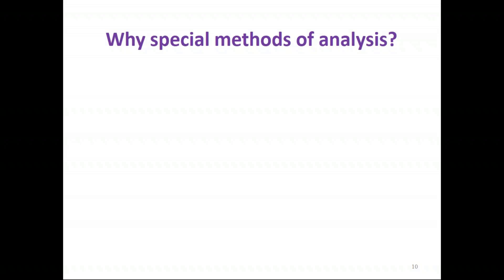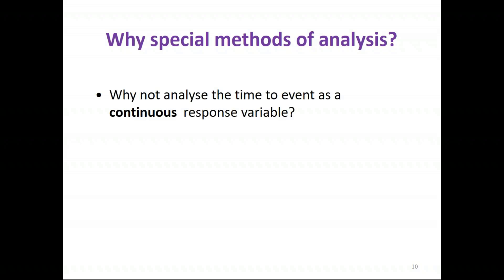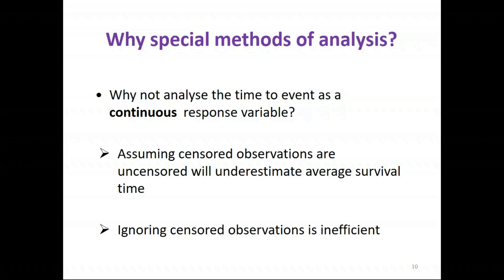When dealing with time-to-event data, time is obviously a continuous variable, so why do we need to use special methods of analysis? Why can't we just analyse the time-to-event as a continuous response variable and undertake a meta-analysis looking at the difference in means? Well, the main issue is because of the censoring — we have to deal with that in our analysis.